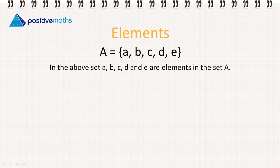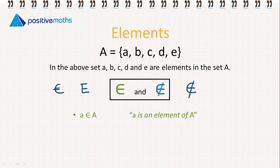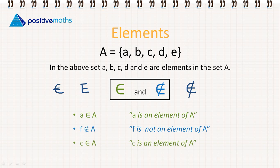Let's discuss the elements in the set. In the above set, A, B, C, D, and E are elements in the set A. The symbol we use for 'element of' is kind of similar to the euro sign, but we don't want to mix them up — it's a curved shape with a line going through it, like a capital letter E. It's not the euro sign and it's not the capital letter E; it must be this curved shape with the line. If something is not an element, we use that symbol with a line through it. So: A is an element of A; F is not an element of A; C is an element of A; and T is not an element of A.